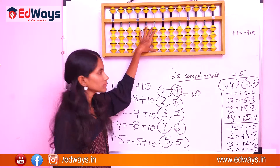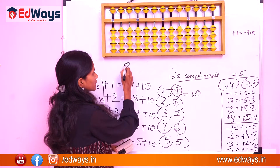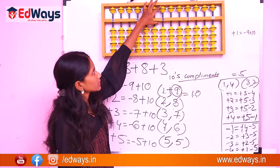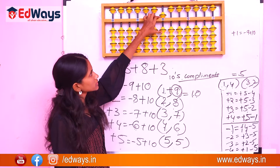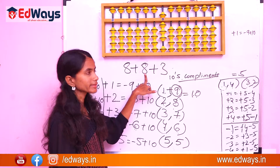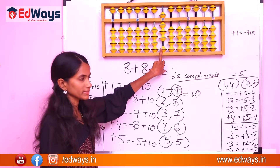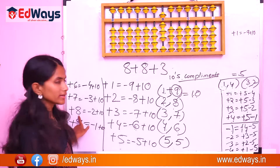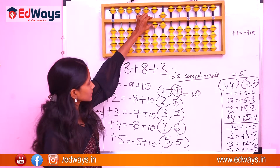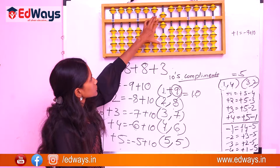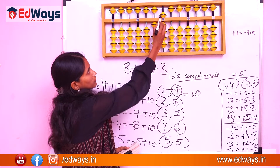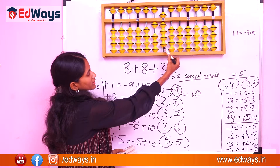Another example: 8 plus 8 plus 3. For 8: represent 5, 6, 7, 8. Now add the next 8 — it is not available directly. 8's complement is 2, so minus 2 plus 10. Then add 3 directly. The answer goes 10, 15, 16, 17, 18, 19.